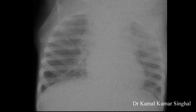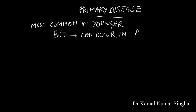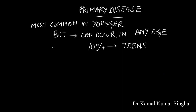This is a 2-and-a-half-year-old child with a diagnosis of presumptive TB, with lymph nodes in the right hilar paratracheal region as well as on the left side. Note that this is an underexposed film. The primary disease is most commonly seen in young children, but it can be seen in any age group, and 10% of primary disease is seen in teenagers.